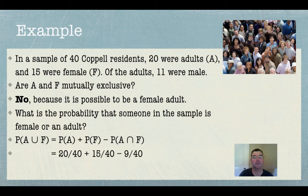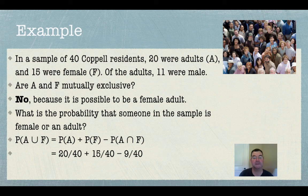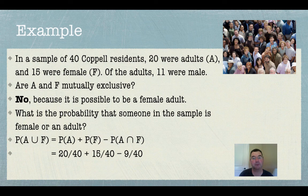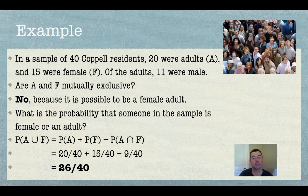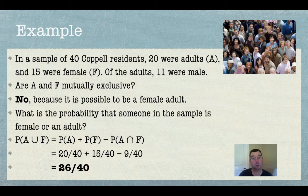All right, so that's 20 out of 40 for the probability of being an adult, 15 out of 40 for the probability of being a female, and 9 out of 40 for the probability of being an adult female. And once I add and subtract all of that, I get 26 out of 40. So 26 out of the 40 residents in that sample were either an adult or a female or both.